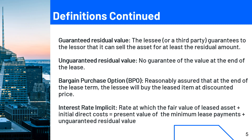The interest rate implicit in the lease is the rate at which the fair value of the leased asset plus initial direct cost equals the present value of minimum lease payments plus unguaranteed residual value. If you're not sure how to calculate this, it's okay, because normally this is given within the case.